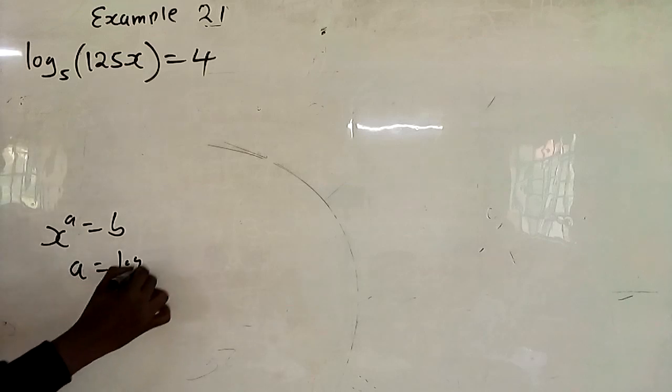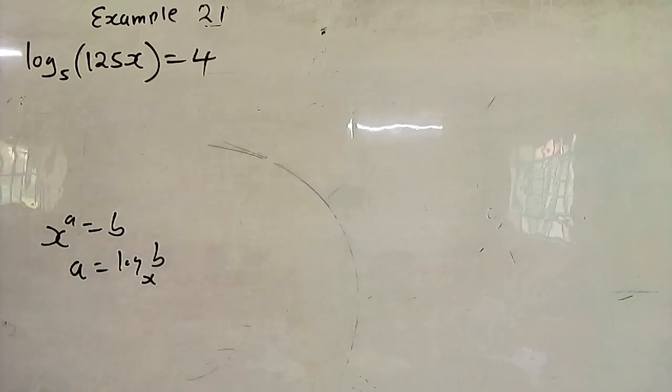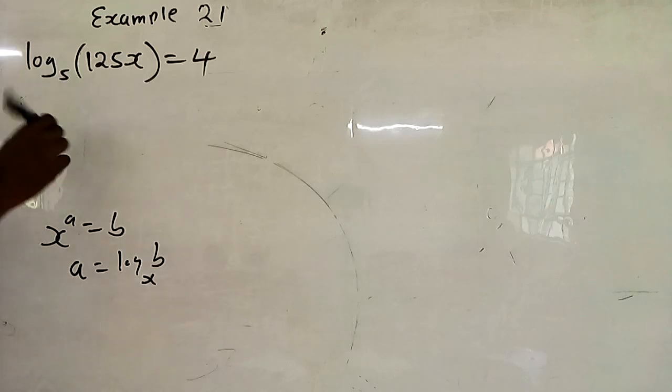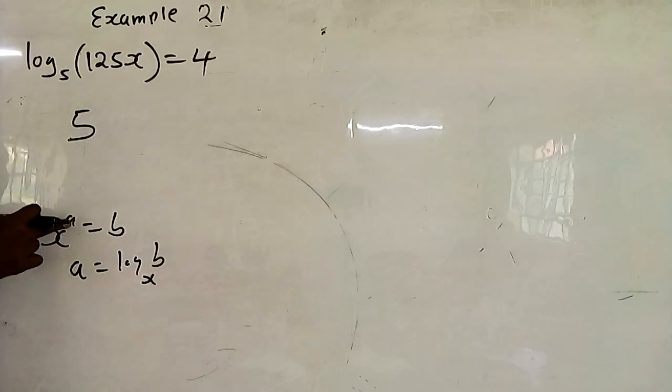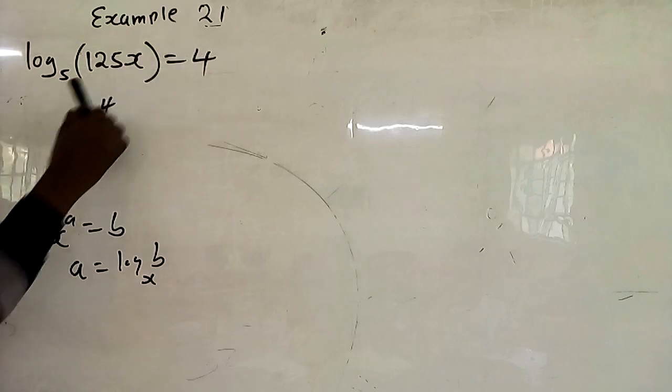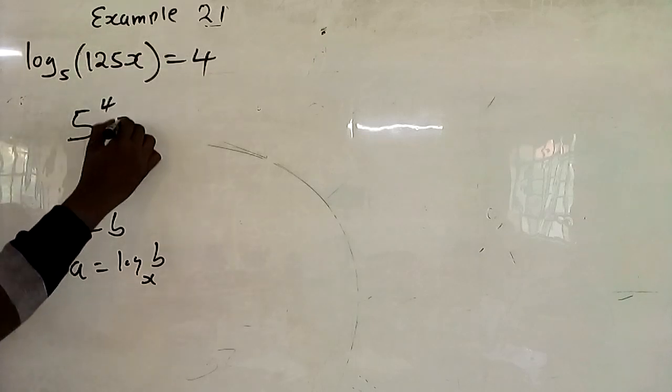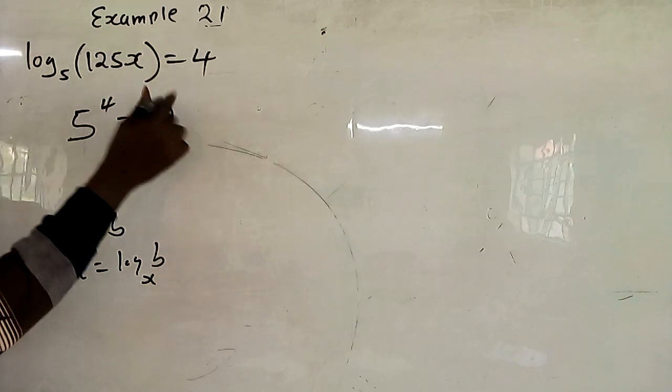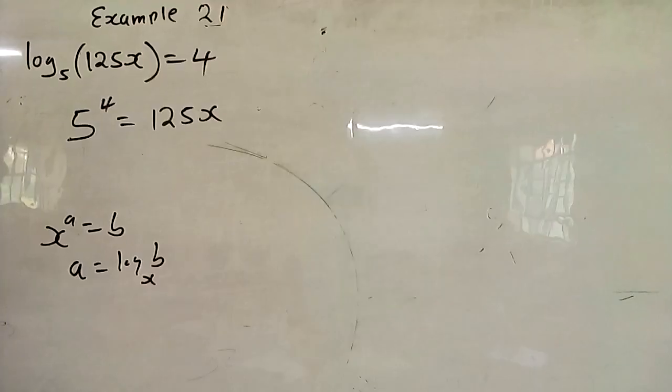So the index is the log of a corresponding number to the given base. So it means this 5 is the base, then you see our a. Our a is the index, meaning index is 4. Meaning 5 raised to power 4 is equals to corresponding number 125x.